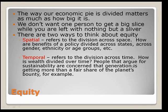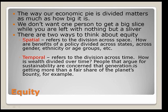Spatial refers to division across space — how are benefits of the policy divided across states, across gender, across ethnicity, or age groups? Temporal refers to division of the pie across time — how is wealth divided over time? People who argue for sustainability, for example, are concerned that this generation is getting more than their fair share of the planet's bounty. When you're making a policy, you have to be concerned about whether it's equitable. If the federal government does a policy and everybody on the East Coast benefited while everybody on the West Coast didn't, you might argue that's not very fair across space. Or if old people gained and young people didn't, you might argue it's not fair.